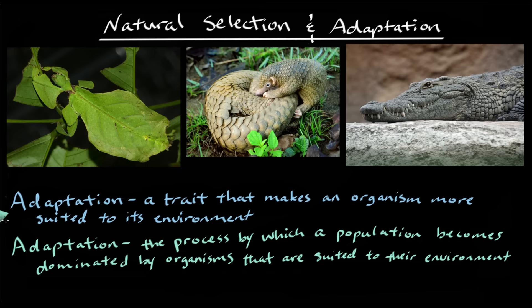The point is that adaptation happens in a population as its organisms accumulate adaptations, and this all happens through the process of natural selection. With natural selection, we see organisms with beneficial heritable traits increasing their share of the gene pool in a population because they're more likely to mate and produce offspring. This means these well-adapted organisms have higher fitness.